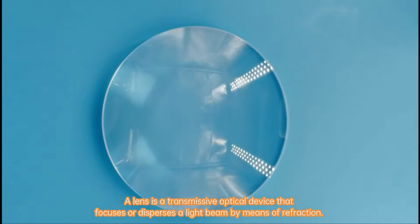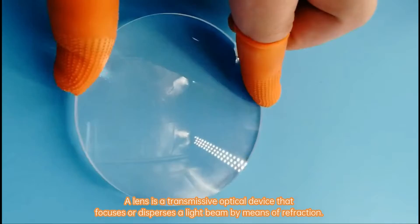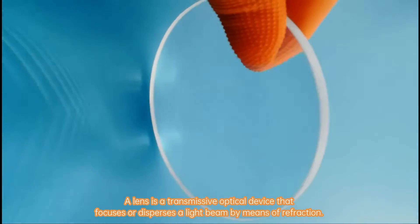Convex lens. A lens is a transmissive optical device that focuses or disperses a light beam by means of refraction.